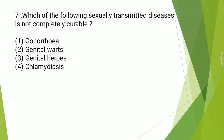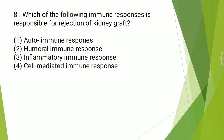Seventh question: which of the following sexually transmitted diseases is not completely curable? Options: gonorrhea, genital warts, genital herpes, chlamydia. The answer is genital herpes. Eighth question: which of the following immune responses is responsible for rejection of a kidney graft? Options: autoimmune response, hormonal immune response, inflammatory immune response, cell-mediated immune response.